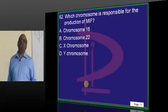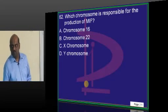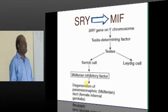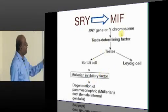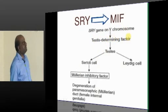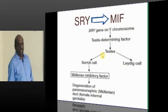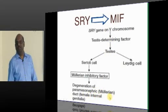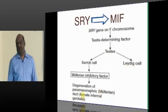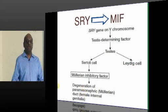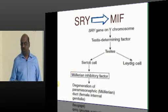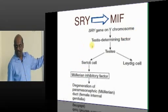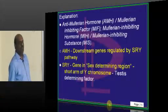Mullerian inhibiting factor is produced typically by the Y chromosome. There is a gene called the SRY gene which makes Mullerian inhibiting factor. The SRY gene is on the Y chromosome, and the Mullerian inhibiting factor causes degeneration of the Mullerian duct, which would otherwise lead to development of the female genital system. So it should not develop in males — the courtesy goes to MIF, which is produced by the SRY gene on the Y chromosome.